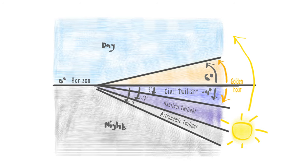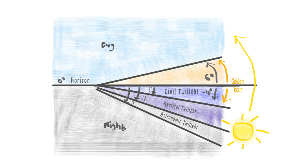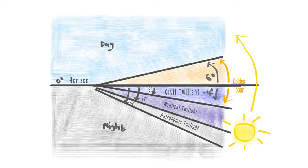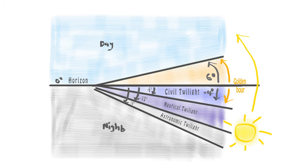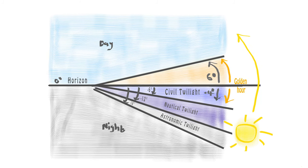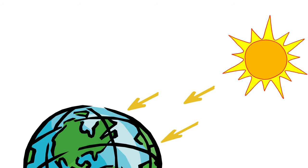More specifically, the warm sunlight found during golden hour usually occurs when the sun is between 6 degrees above and 4 degrees below the horizon. This golden light phenomenon happens when the sun rays hit the earth at a shallow angle. The rays have to travel a longer distance through the earth's atmosphere before reaching a particular point on the surface of the earth.